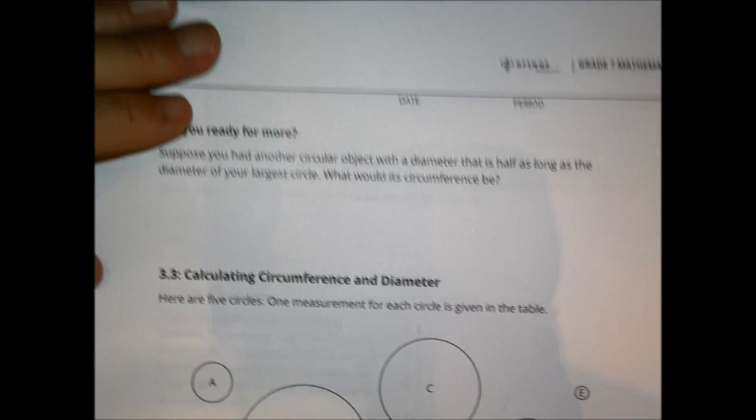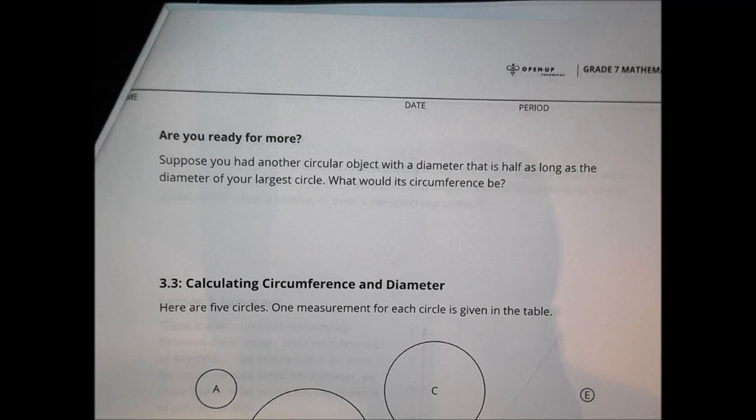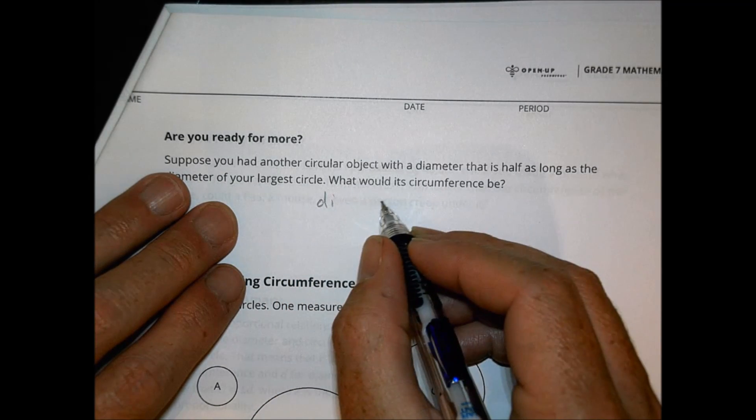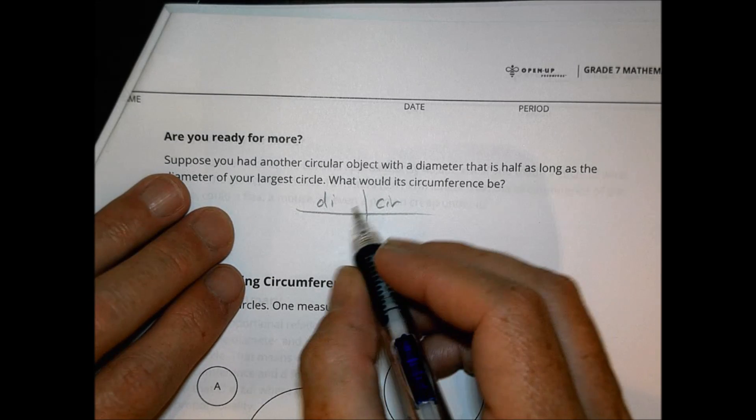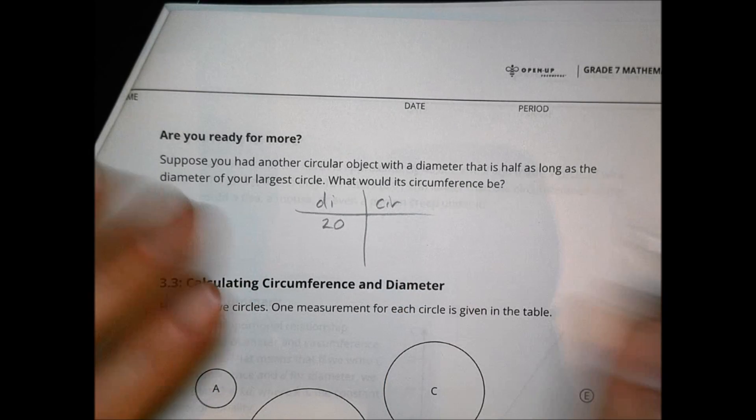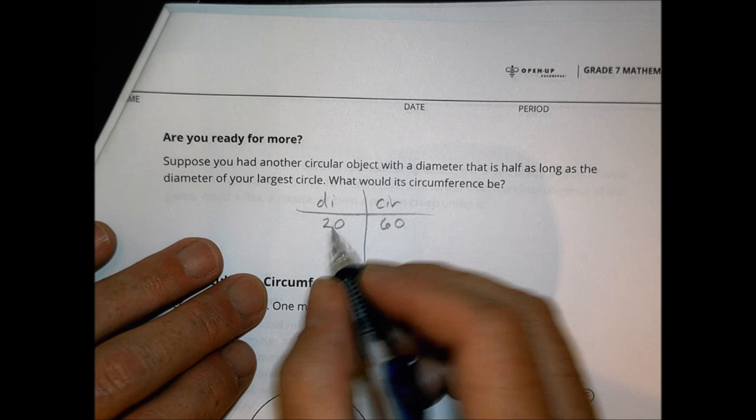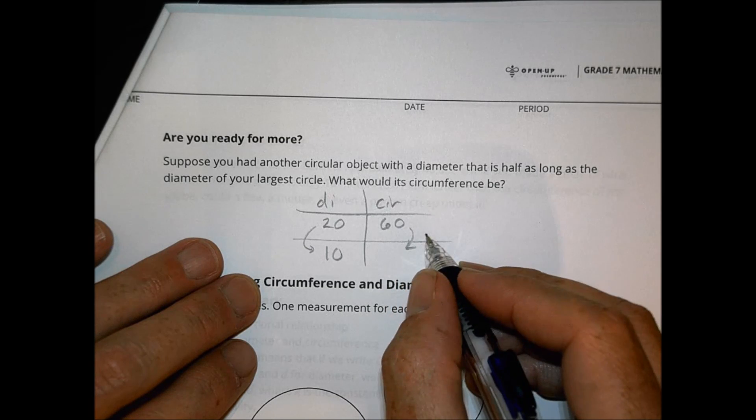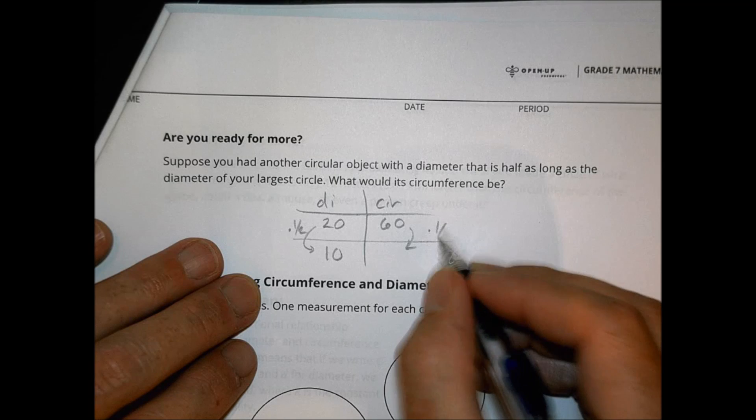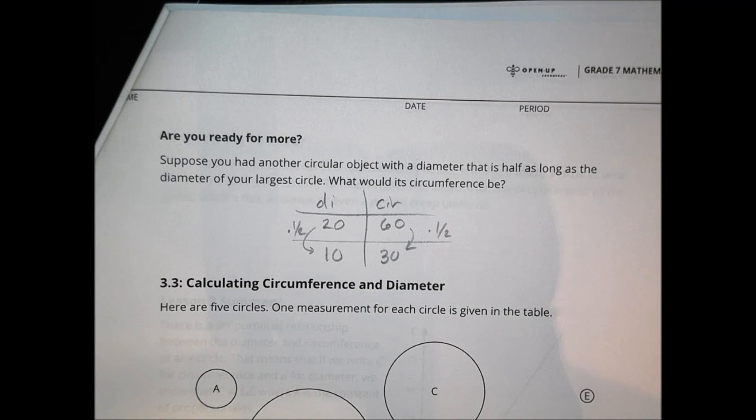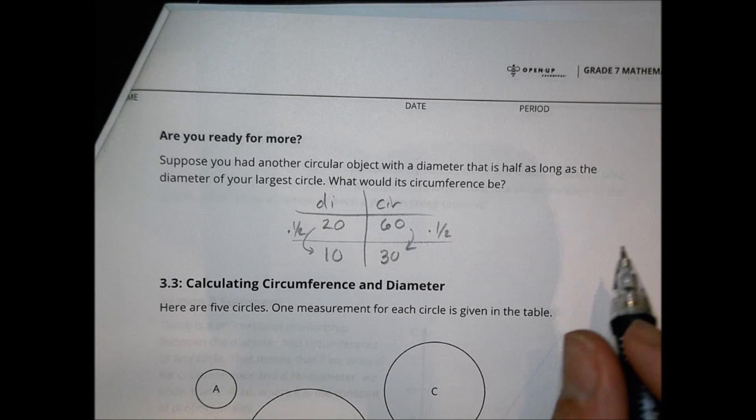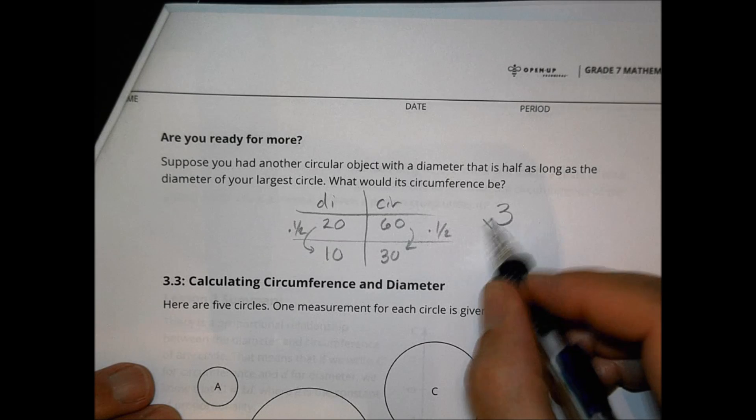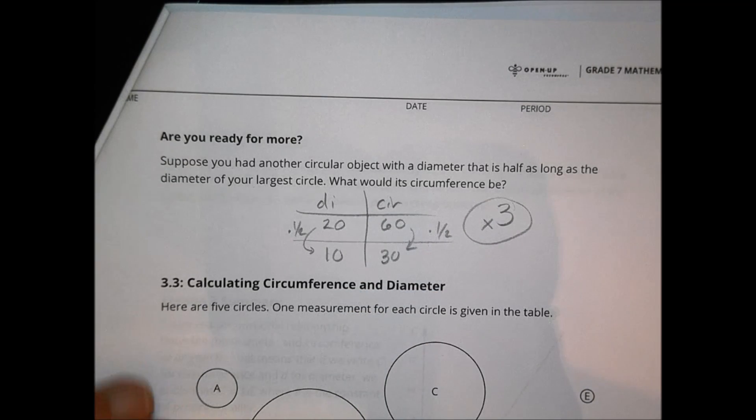Suppose you had another circular object with a diameter that is half as long as the diameter of your largest circle. Well, for me, I had my largest one with a diameter of about 20, it was 19.5, and my circumference was about 60. If I did a half of that, half the diameter is 10. What's going to happen here is this is also going to go down multiplying by a half. I'll multiply it by a half and I end up with 30. So my circumference would be 30. I can do that because there's a proportional relationship between the two. We notice that it's about multiplying by about 3 to get the difference between diameter and circumference.